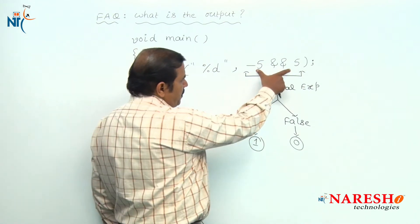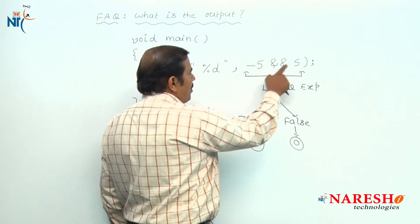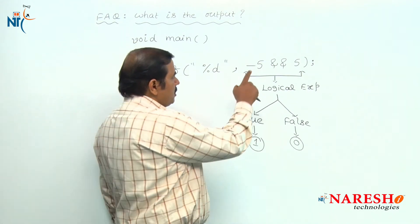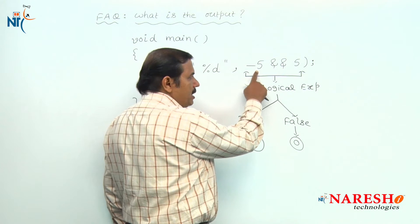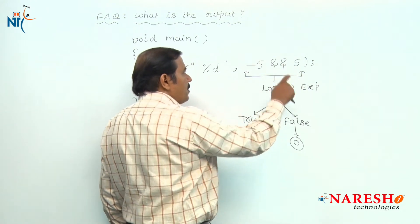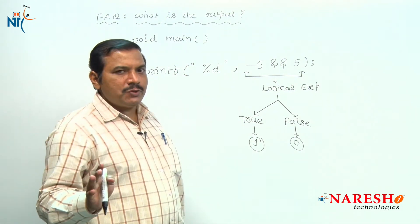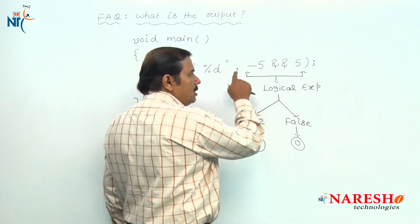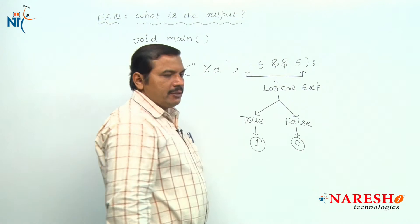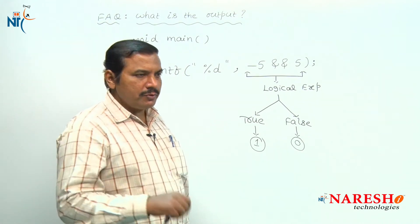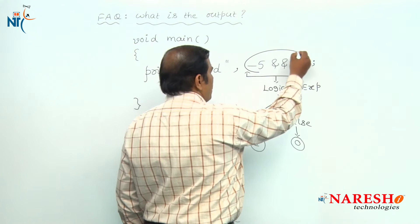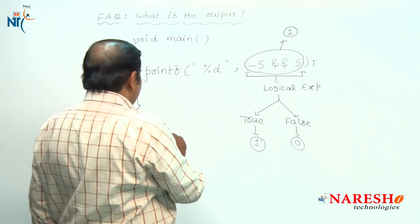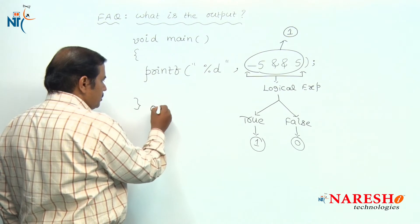In this given expression, both operands are non-zero values. Hence, the value of the first operand is treated as true, and the second operand value is also treated as true. If both operands are true, the overall logical expression is evaluated as true. Hence, the value of this logical expression is 1. The output of this code is 1.